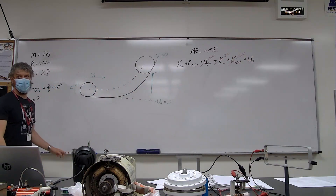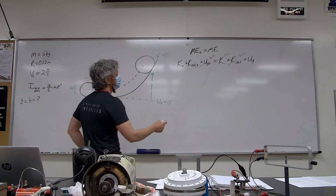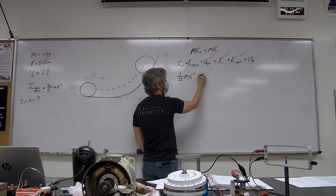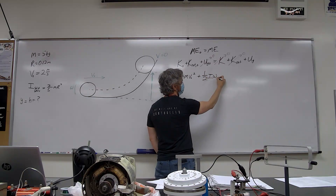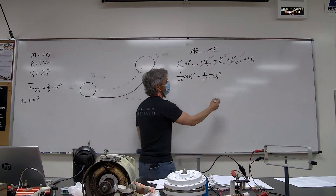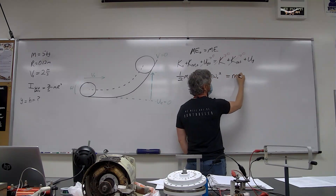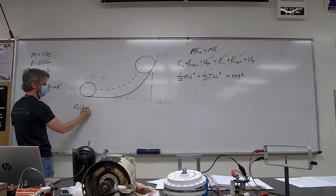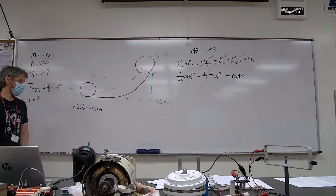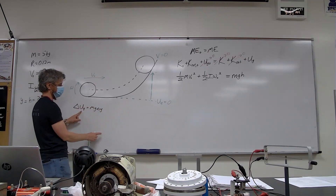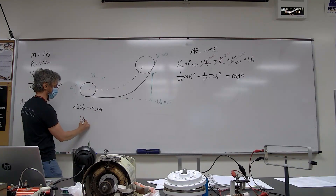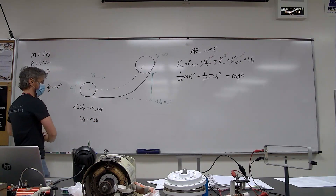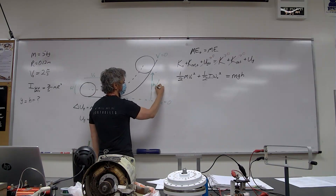My equation becomes: ½mv₀² + ½Iω₀² = mgh. Remember the formula sheet says ΔU_g = mgΔy. Since initial PE is zero, final gravitational PE is simply mgy, which corresponds to height h. But I only have velocity, radius, and mass as known numerical values — I don't have I or ω₀ — so I need to use the same substitutions from before to tie those terms together.